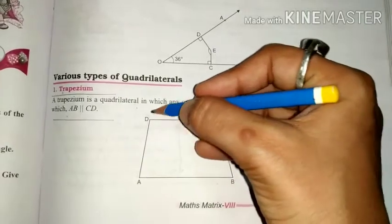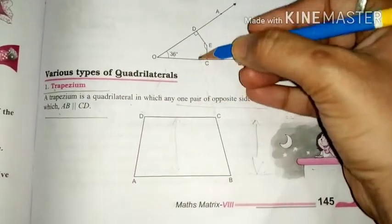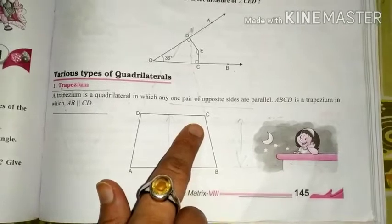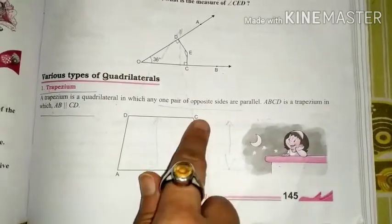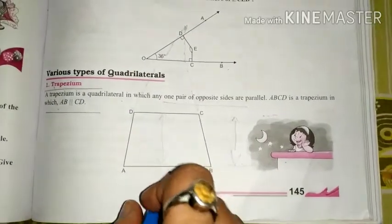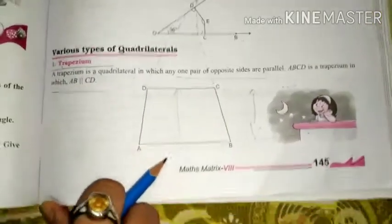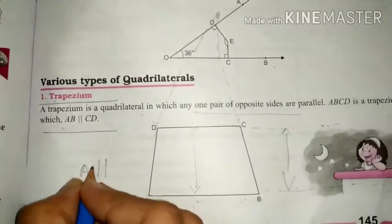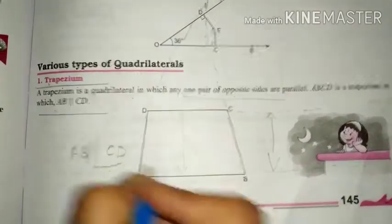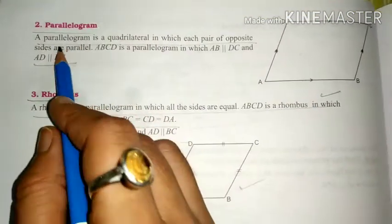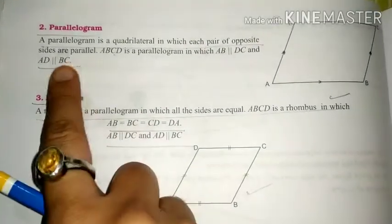The non-parallel side — if we increase the distance between those sides, they will intersect. So that side is non-parallel. For the trapezium, AB and CD are the parallel sides. We show the parallel sign with a double line. AB is parallel to CD.